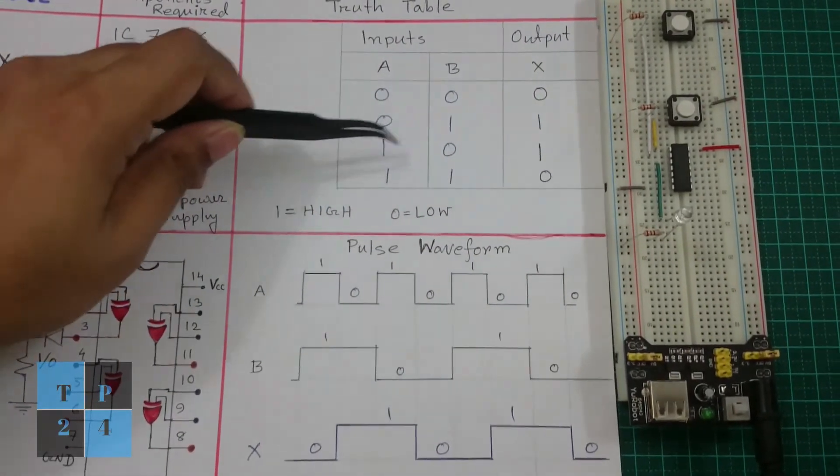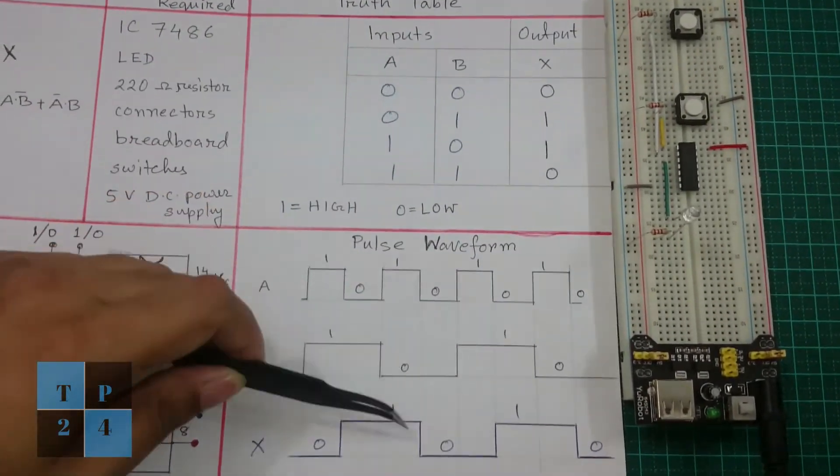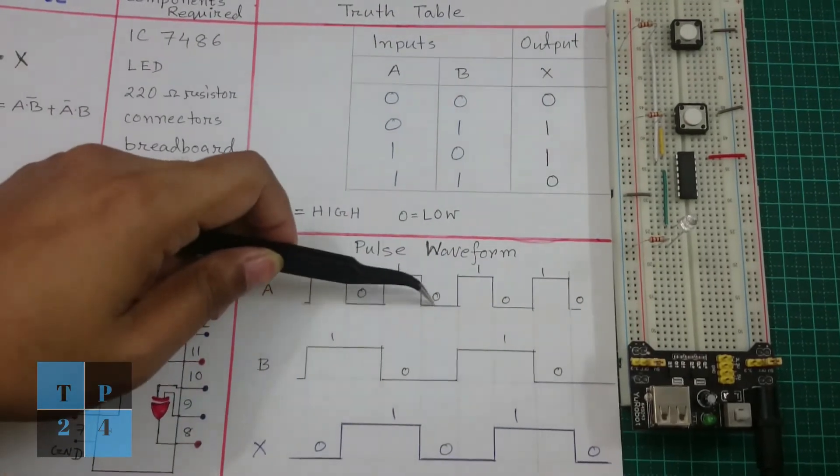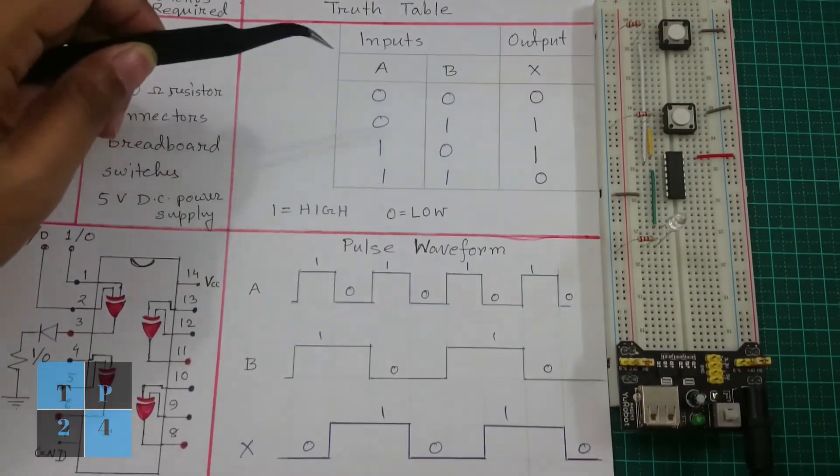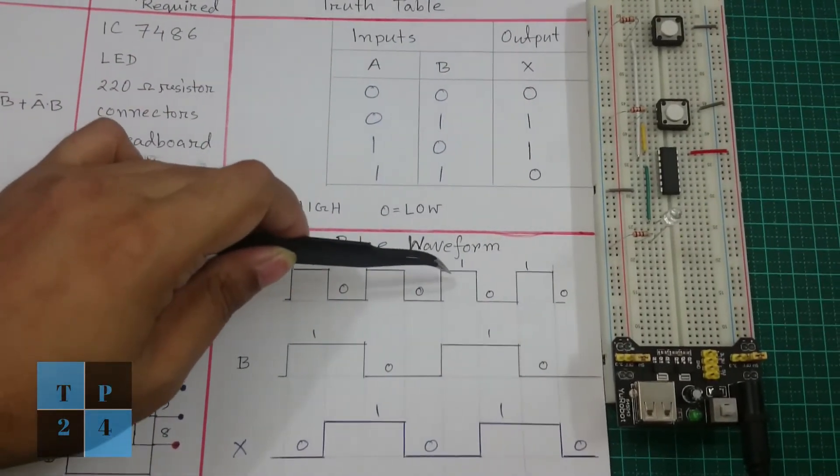And 1, 0 is 1 so 1, 0 is 1 and here again 0, 0 is 0 that means 0, 0 is 0 which follows the truth table.